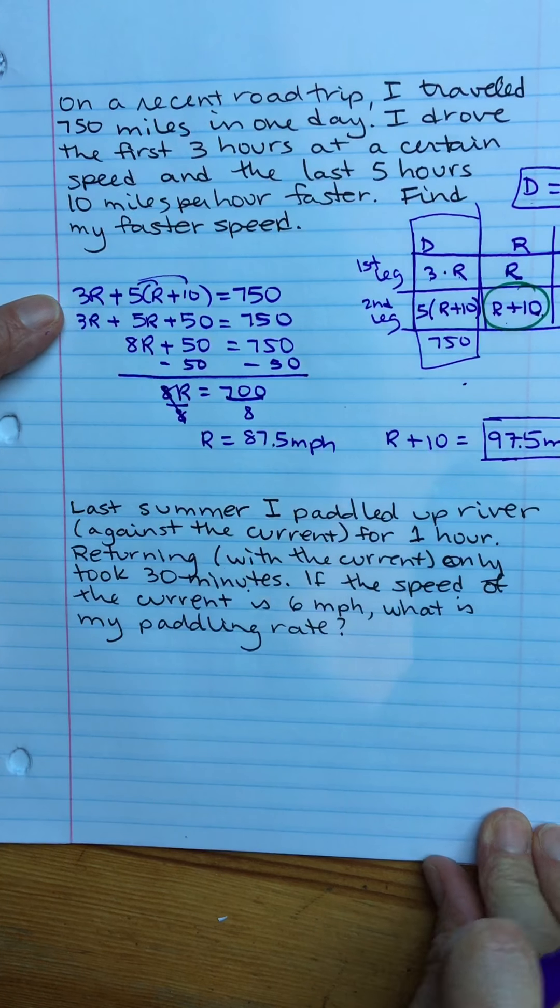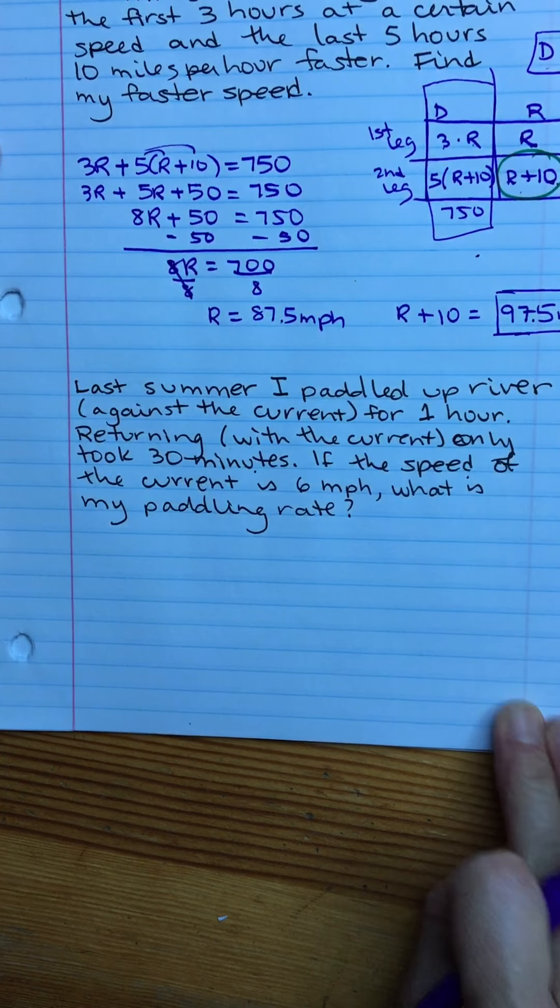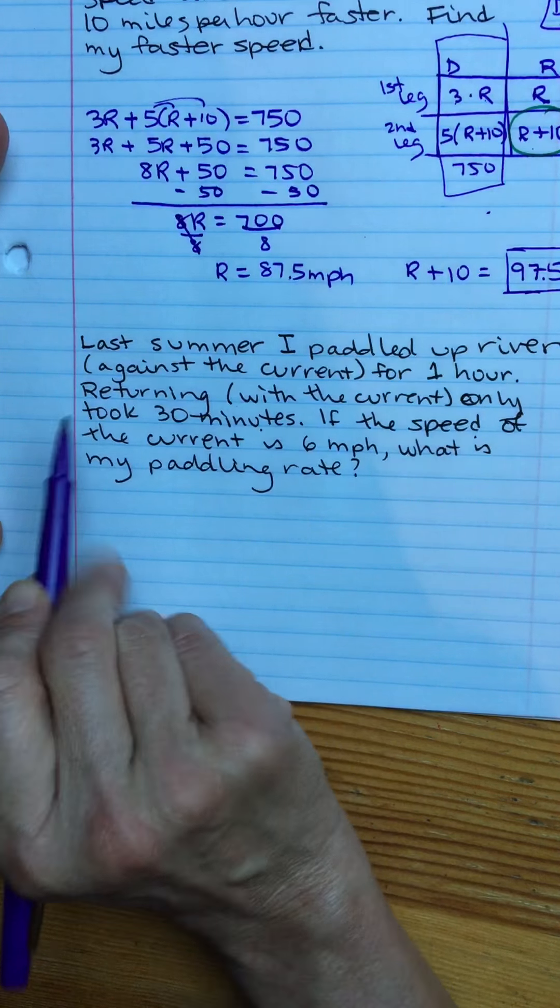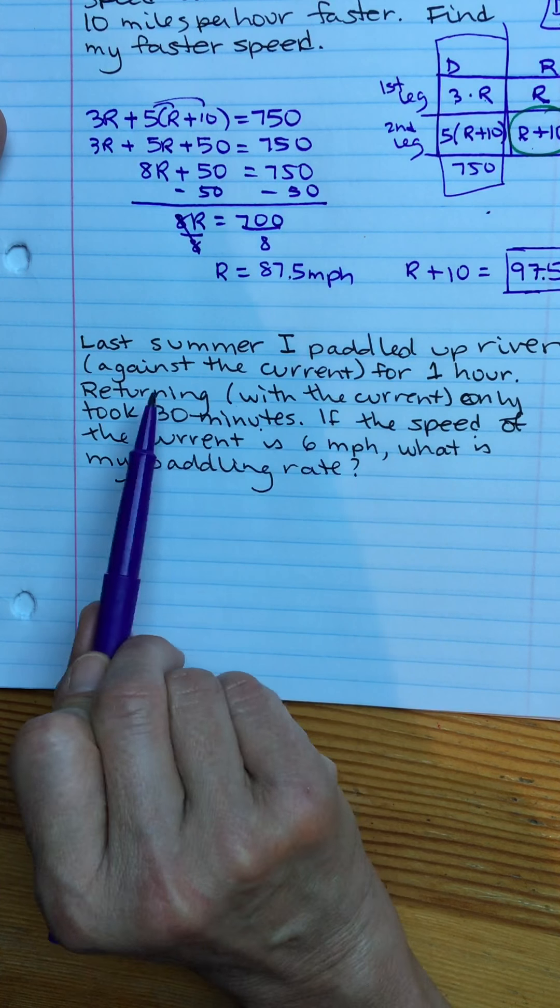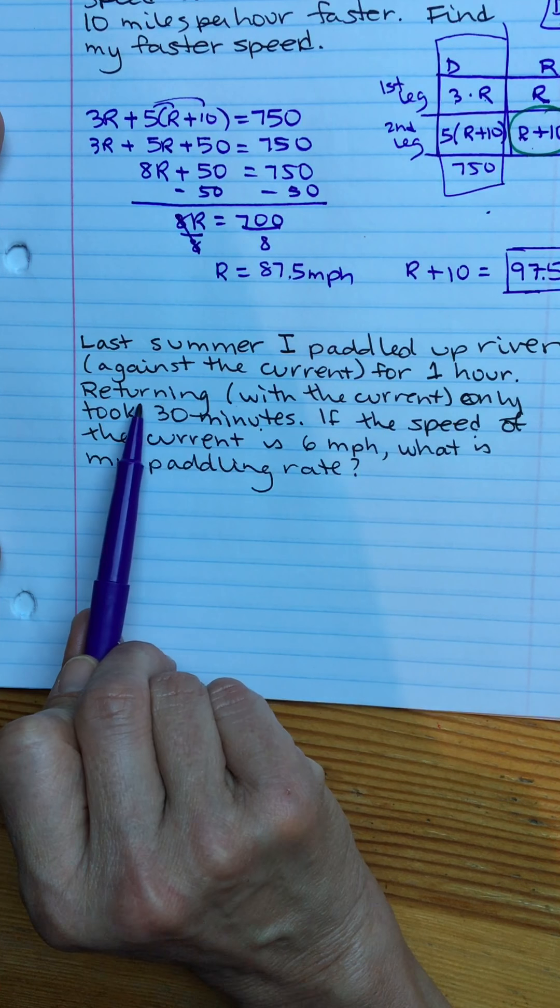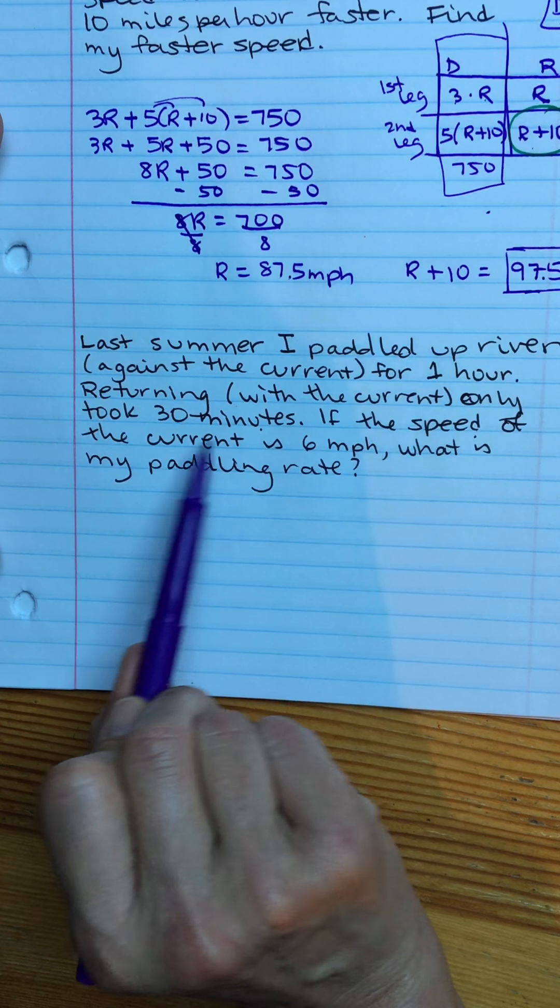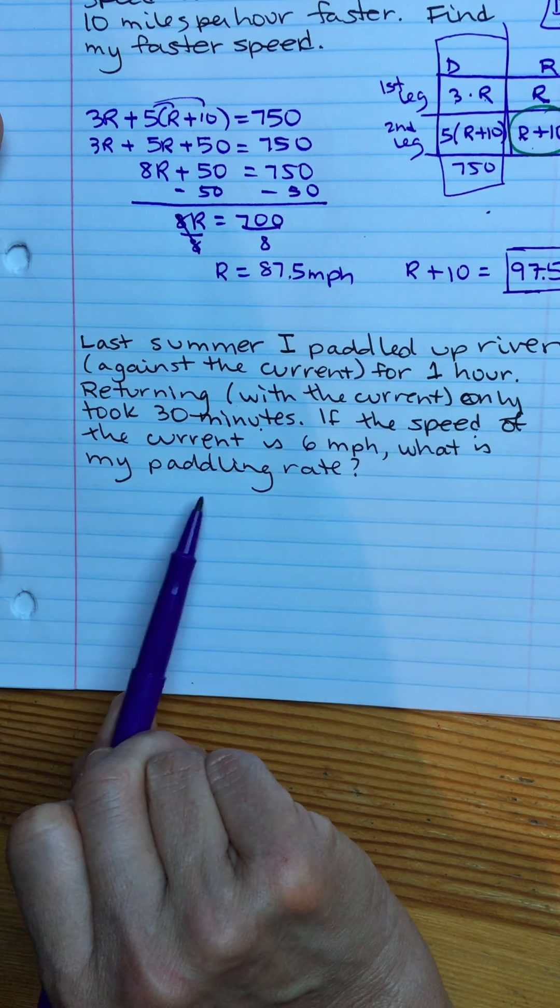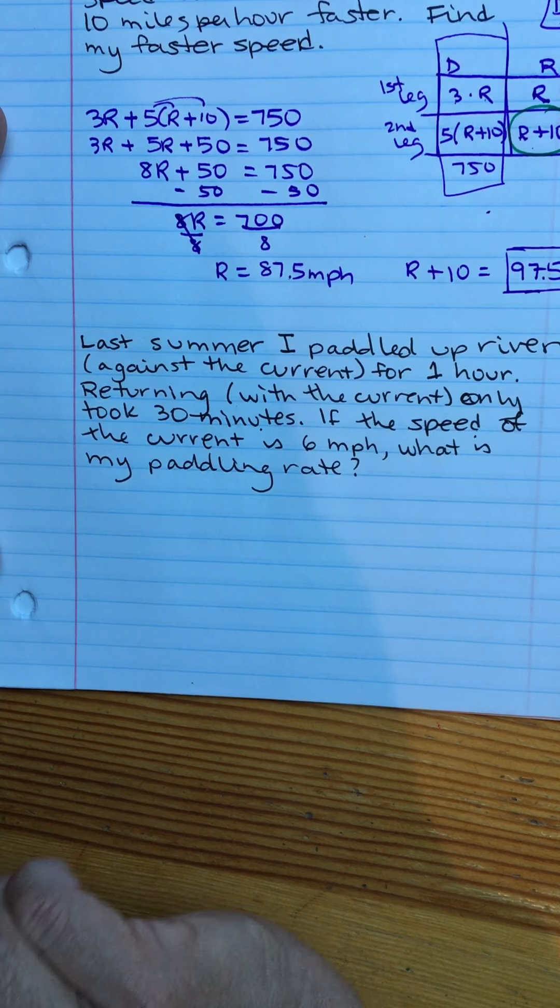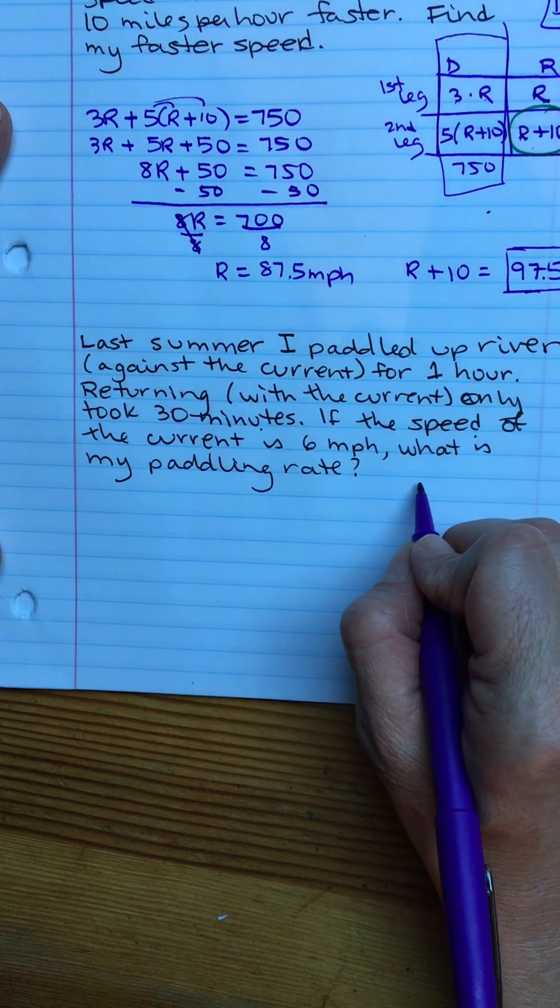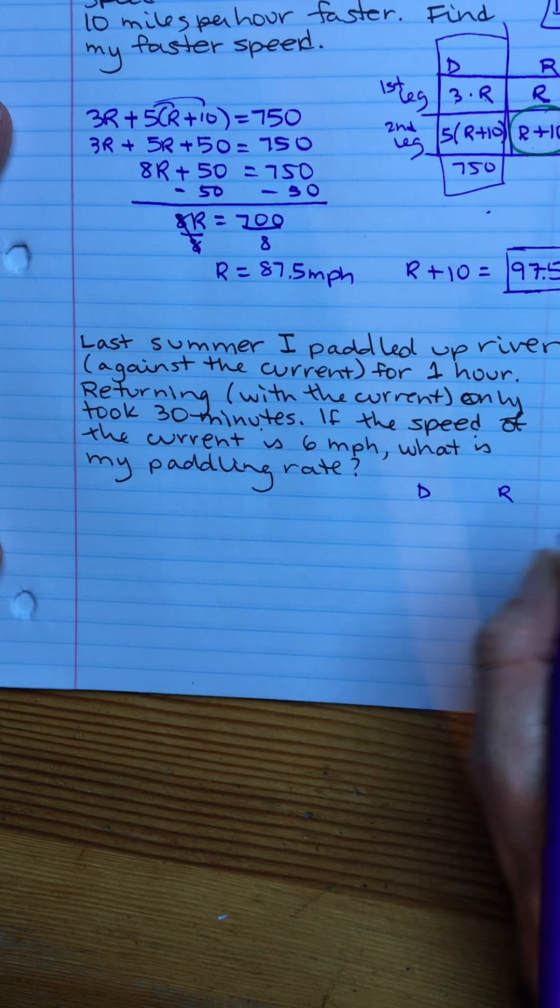This next one I know is not accurate because I just looked up what reasonable paddle times were and I'm not even a reasonable paddler. But we'll pretend. So last summer I paddled up river, so up river means I'm going against the current. So the current's working against me for one hour. Returning, so with the current, only took 30 minutes. If the speed of the current is 6 miles per hour, what is my paddling rate? It's another distance equals rate times time question. So I'm going to make my table again. Distance, rate, time.